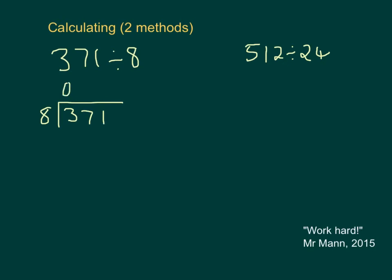0, carrying the 3. There are 4 8s in 37, and that leaves a remainder of 5. And 6 8s of 48, leaving a remainder of 3.